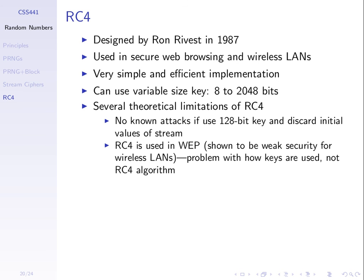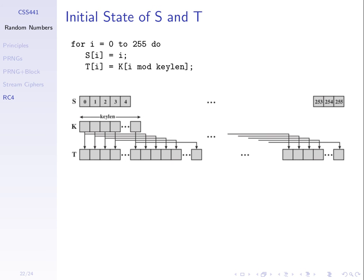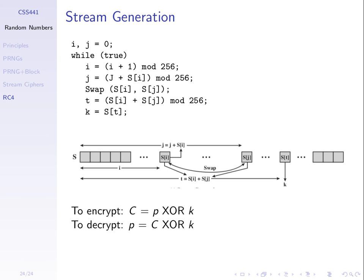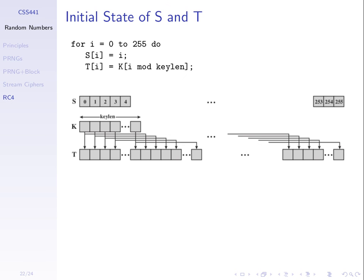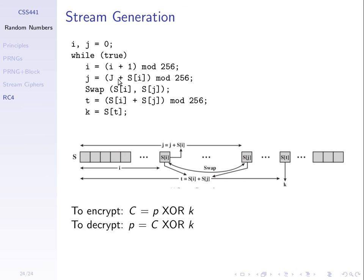There are slides on the RC4 algorithm that we won't cover in this course. It can be implemented in about 10 to 15 lines of code — simple loops, mod operations, additions, and swaps. The operations are very basic from a computer's perspective and therefore very fast to implement. Finally there's an XOR to apply the key stream to the plaintext.